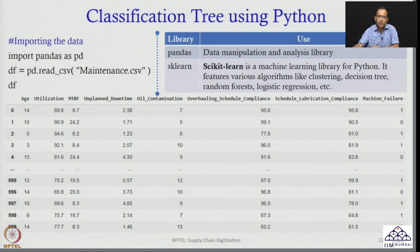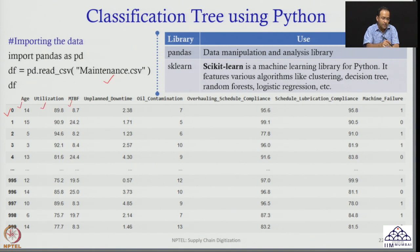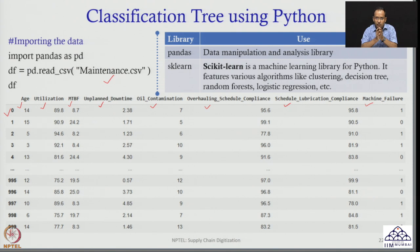To start with, the first thing we have to do is import the data. We have a dataset called maintenance.csv and I have 1000 observations — serial number 0 to 999. The variables are: age, utilization, MTBA value, unplanned downtime, oil contamination, overall schedule compliance, schedule lubrication compliance, and machine failure. So I have 8 columns and 1000 rows.